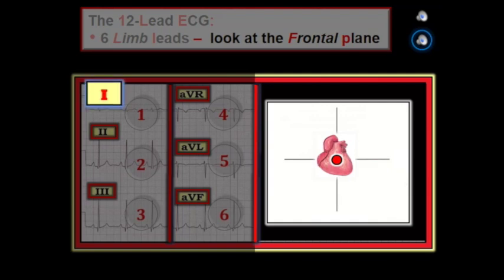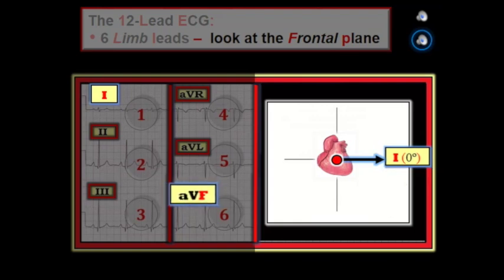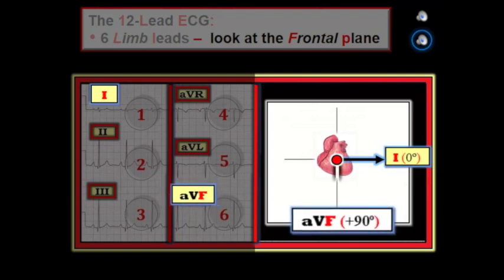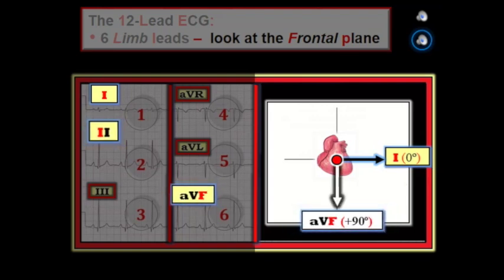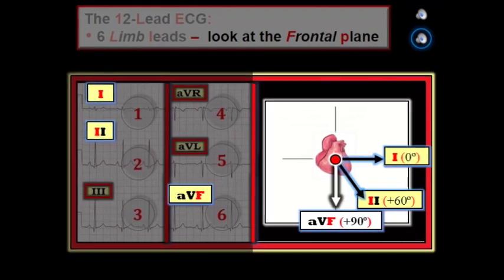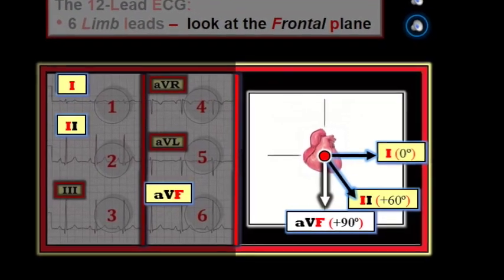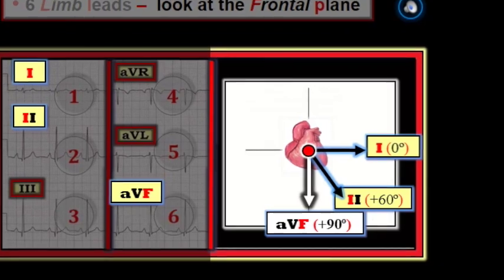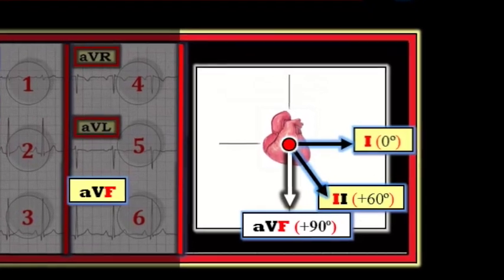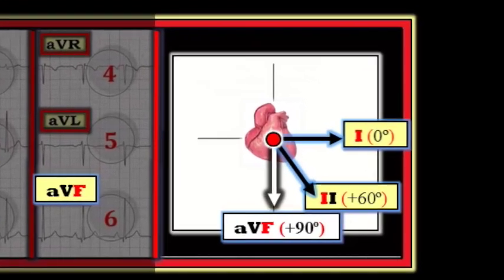These three leads are lead I at zero degrees, lead aVF at plus 90 degrees, and lead II at plus 60 degrees. As we'll see momentarily, these three leads will instantly allow us to determine whether or not a left anterior hemiblock is present. We are almost ready to apply our rapid method for axis calculation, as soon as we discuss a few final principles.